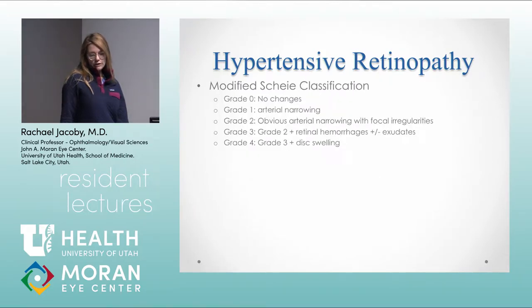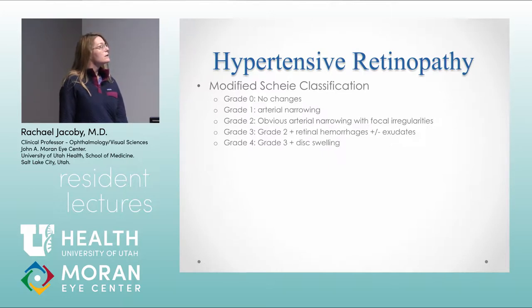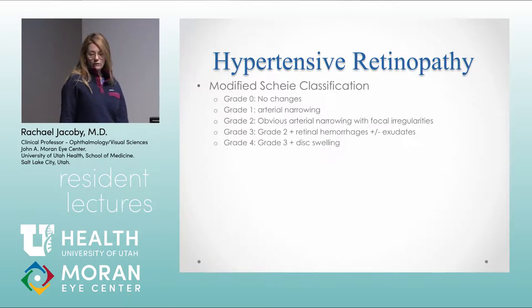The modified Scheie classification: Grade 0 has no changes; Grade 1 has arterial narrowing; Grade 2 has narrowing with irregularities in the arteries; Grade 3 is when you'll see hemorrhages and exudates; and Grade 4 is when you'll see optic nerve edema.